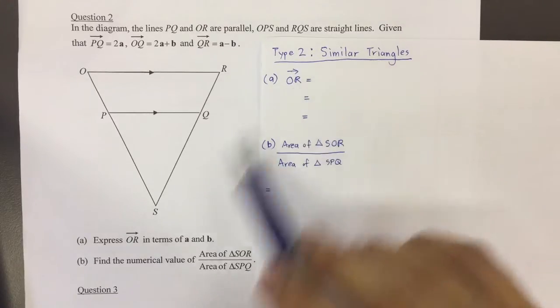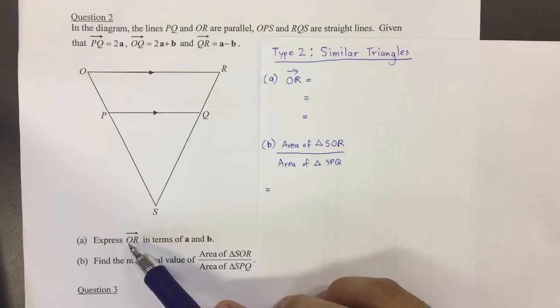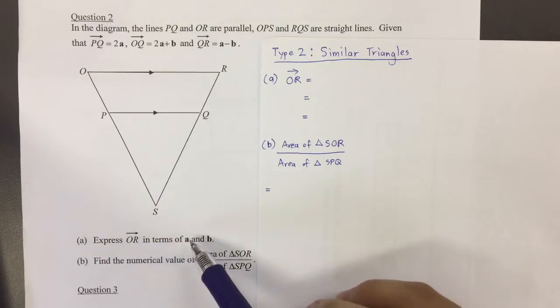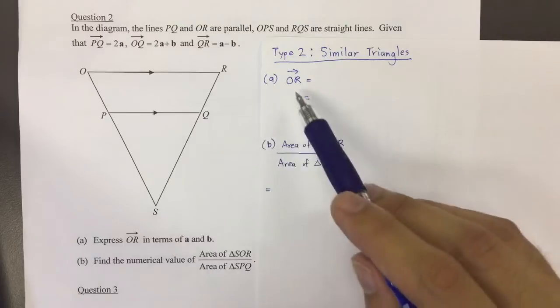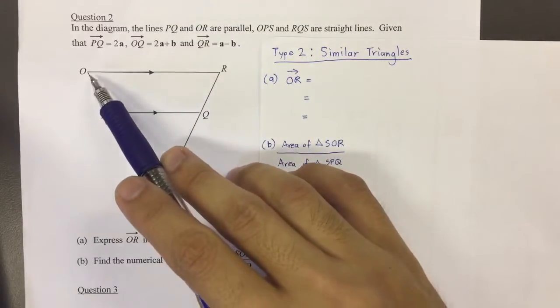So first of all, we start off with part A. They're asking you to express a vector OR in terms of vectors A and B. So OR, basically, if you take a look at the question, is from this point to this point.